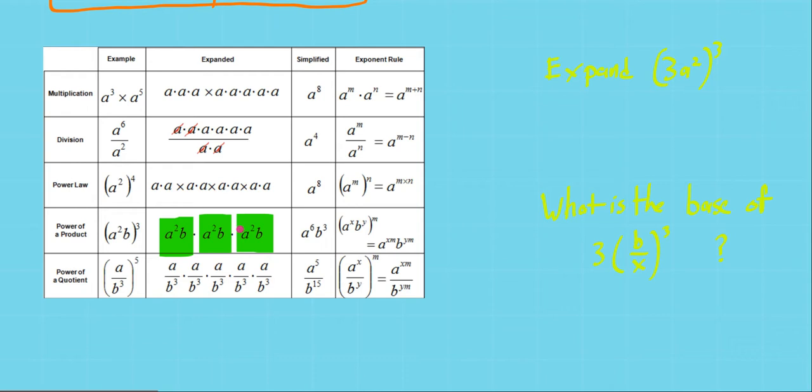Altogether, there's 1, 2, 3, 4, 5, 6 a's, and 1, 2, 3 b's. That's the same as if we took our exponent on the outside and distributed it to each part of the term on the inside.